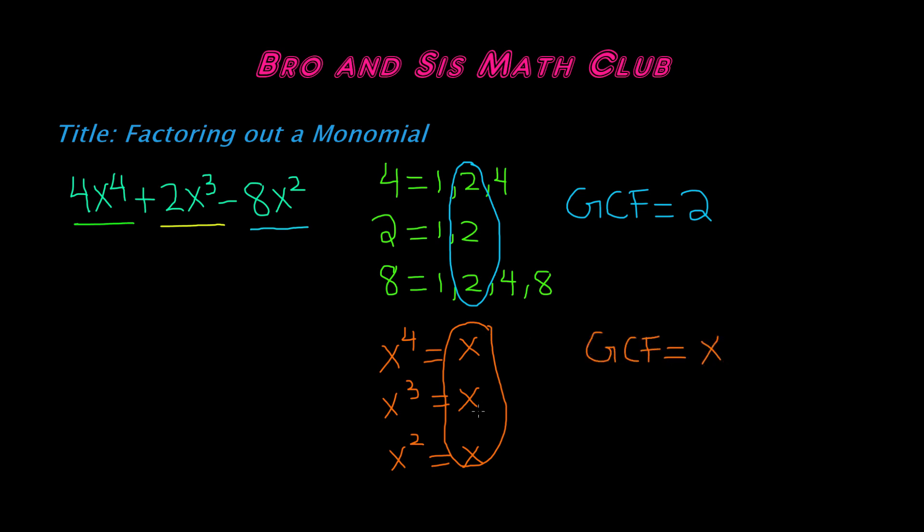So we have 2 and x. And remember, since this is a product, as we said, a monomial can also be a product of a real number, or a constant, and one or more variables with whole number exponents. So we have 2 and we have x. So when we multiply them,